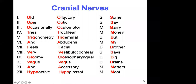Cranial nerve one — olfactory — is for the sense of smell. Cranial nerve two — optic — is for vision. Cranial nerves three, four, and six move the eye: oculomotor (III), trochlear (IV), and abducens (VI) control the six eye muscles — the four recti (superior, inferior, medial, lateral) and two obliques (superior and inferior). By the word 'abducens' you can tell it abducts — moves the eye laterally away from the nose.